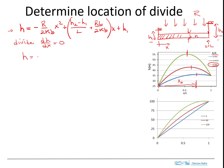If I do that, then I get minus R over 2KB. Taking the derivative of X, I get 2X, and then the derivative of this thing is just going to be the thing in parenthesis, so I get H1 minus H2 over L plus RL over 2KB. That's the derivative.